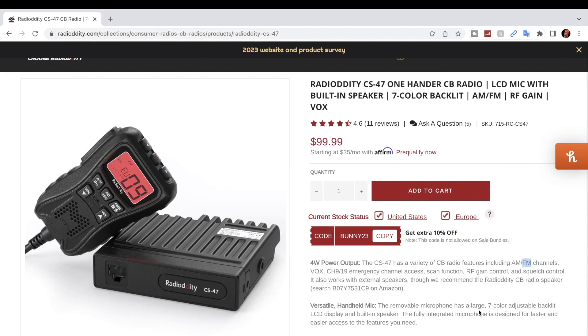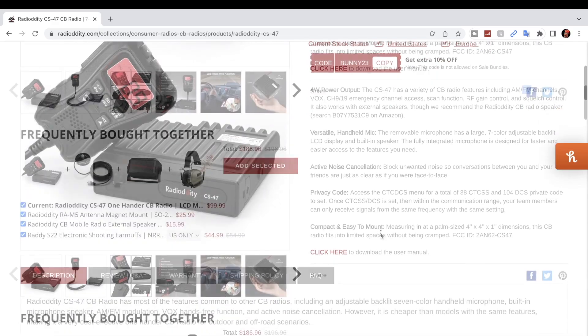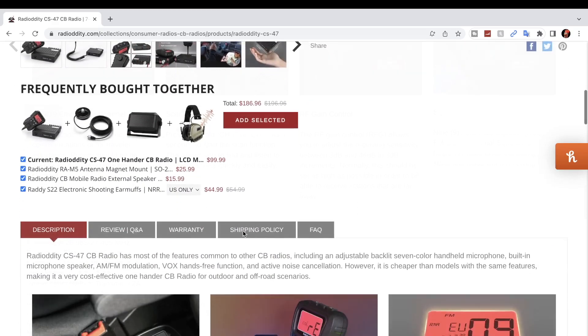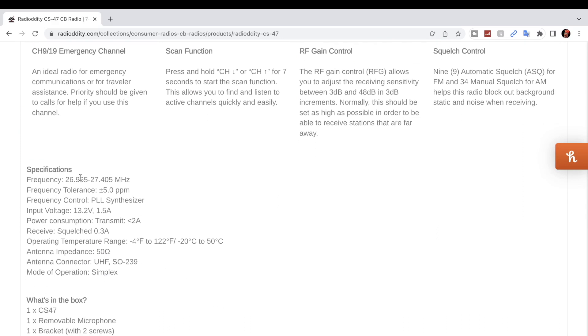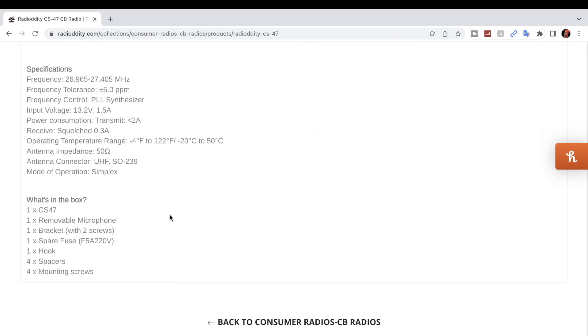At the time of filming this video the radio is currently selling for $99.99 at radioddity.com. There will be a link in the description area. It's a 4 watt radio as all CBs are. It gives you some options to buy antenna and speaker, gives you the frequency range, your tolerance, and how much the input voltage is.